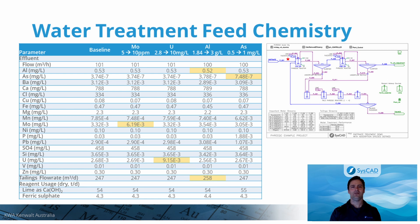Here, the effect of changes in water treatment feed chemistry is predicted. In all cases, results are as expected, with increases in effluent concentration corresponding to increases in the water treatment feed. Because aluminum is a major ion in the raffinate, changing its concentration in the feed affects the tailings volume due to increased formation of aluminum precipitates.